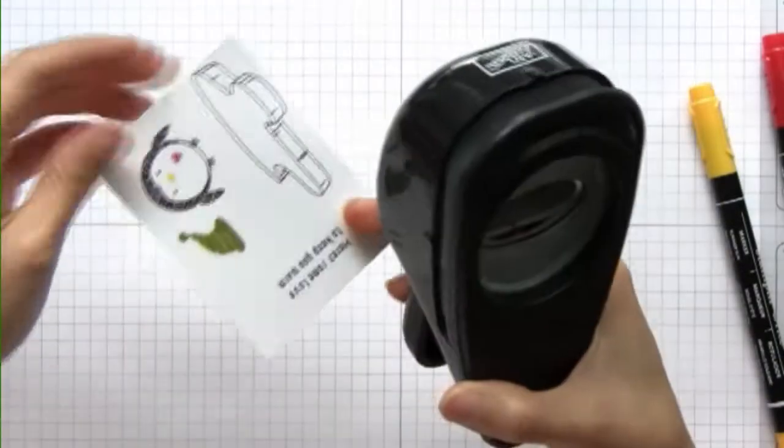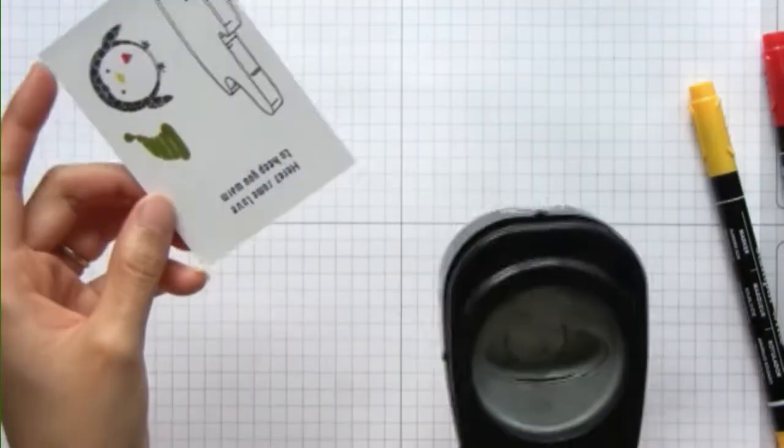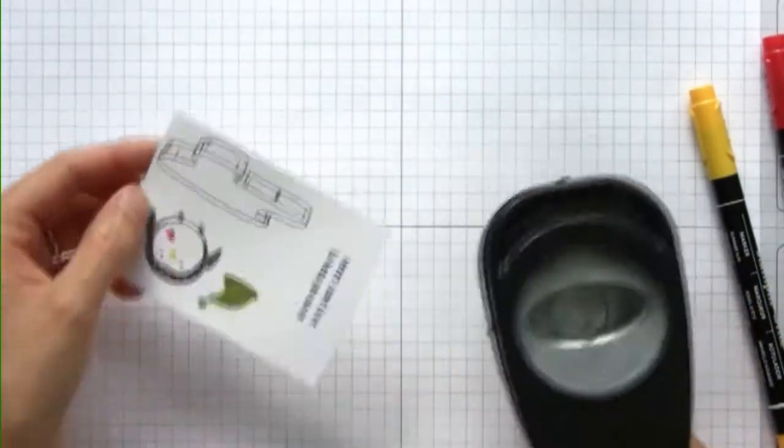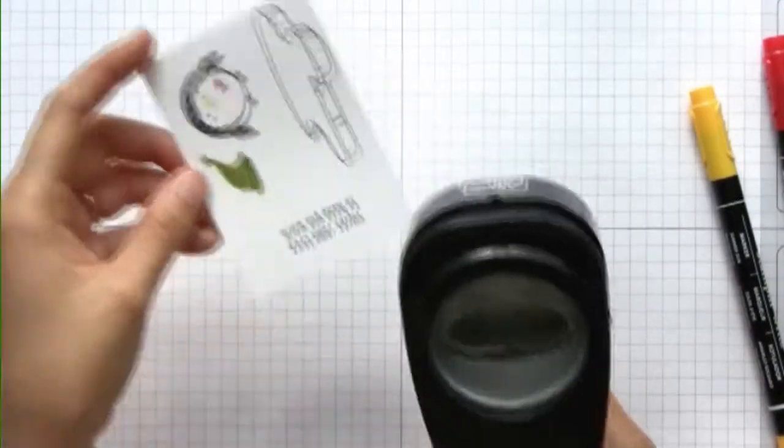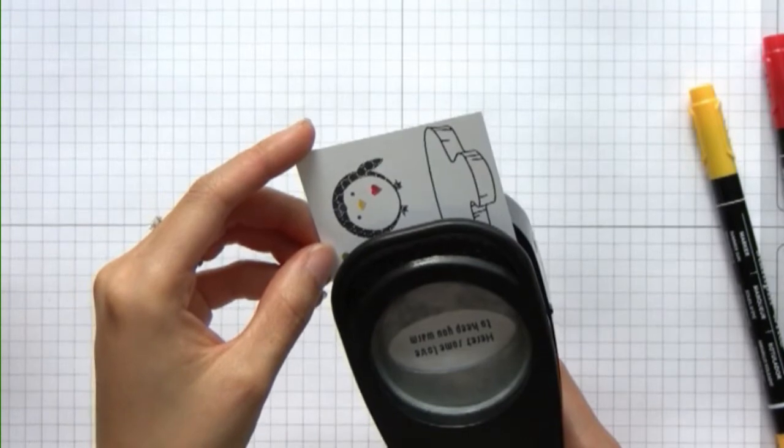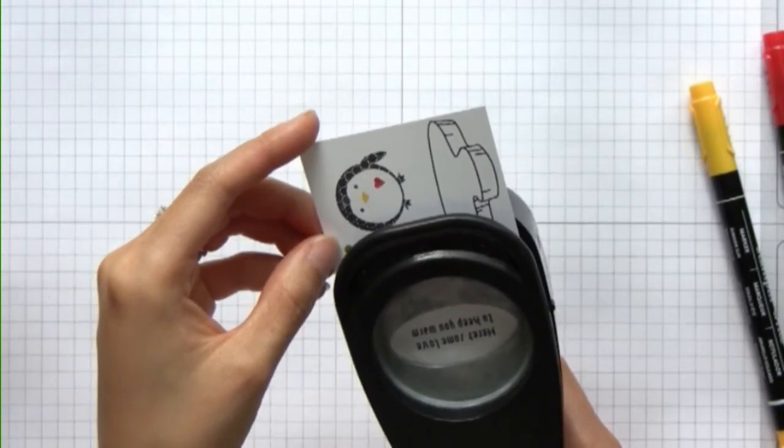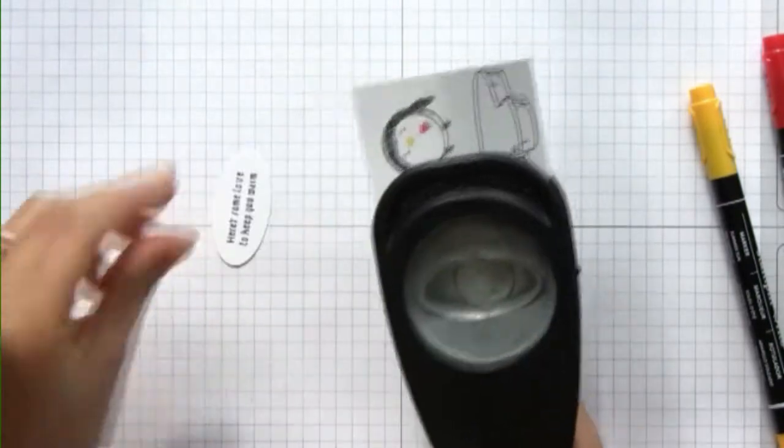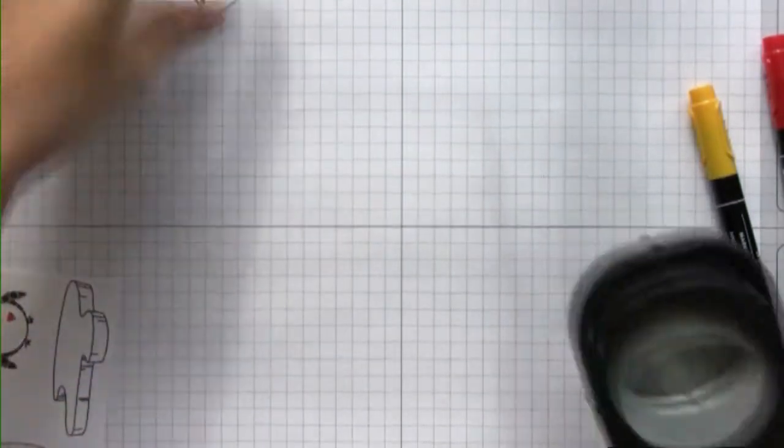I'm going to go ahead and punch out this oval first because it's a lot easier to hold this larger piece of paper. I'm going to line it up, punch it out, and set that aside for later.